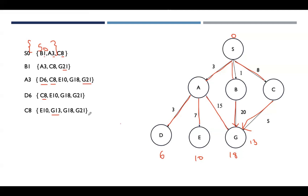Node E has no adjacent nodes, so we write the remaining nodes as they are. Among these, G13 has the lowest cost, so we expand goal node G. G has no adjacent nodes, and we write the remaining nodes. We have now reached the goal node.